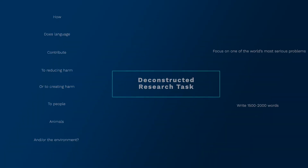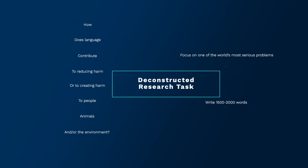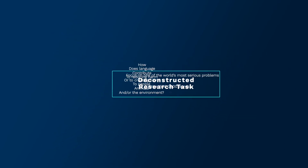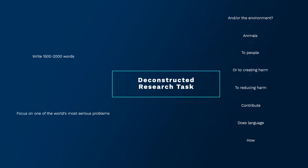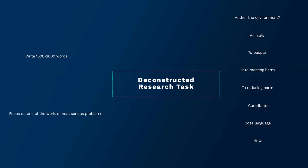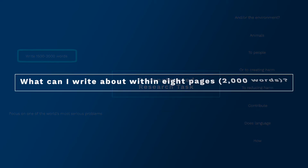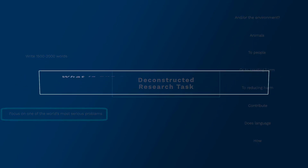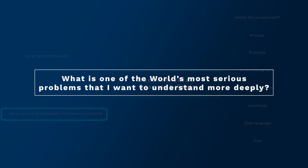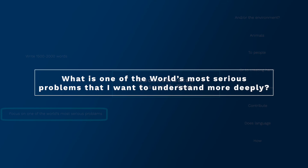Answer these questions, then move on to the next topic. Notice that we flipped the order of the research question and task, and put it into our own words so that we could clearly understand what it is requiring us to do. First: what can I write about within 8 pages or 2,000 words? Next: what is one of the world's most serious problems that I want to understand more deeply?